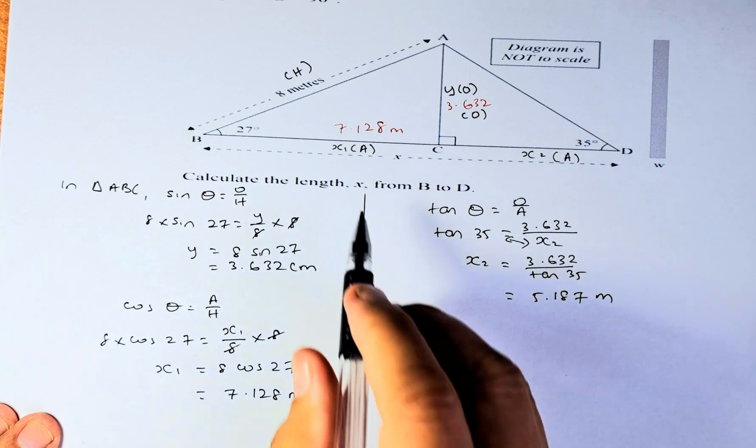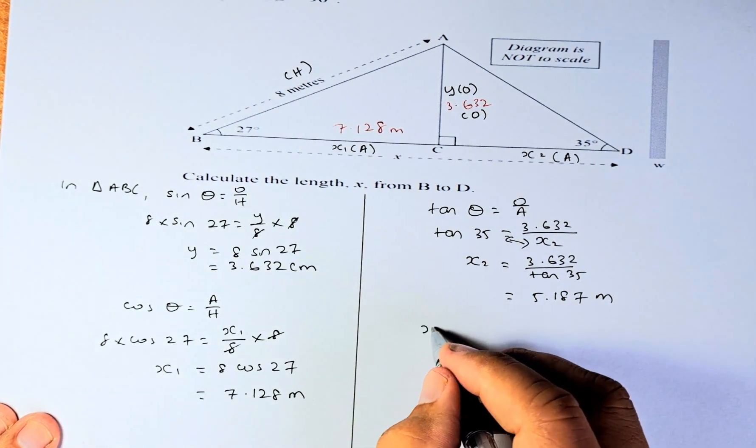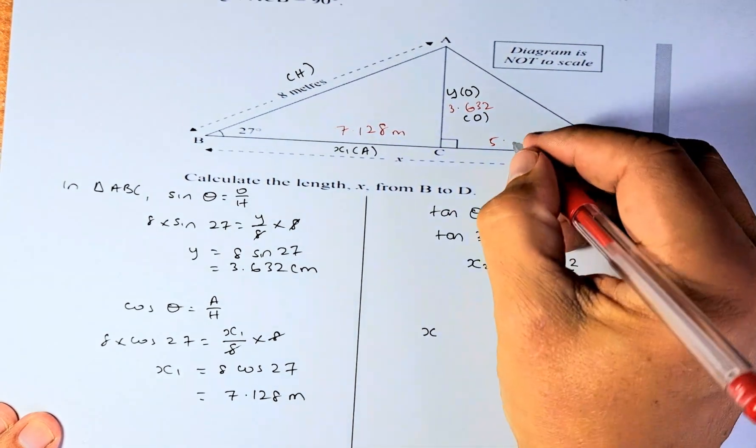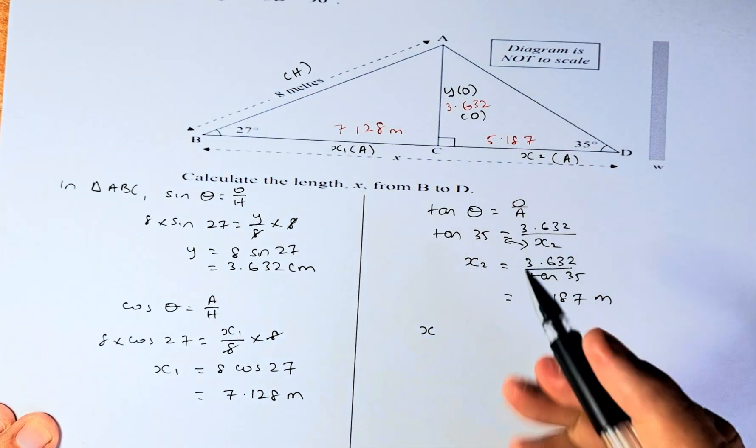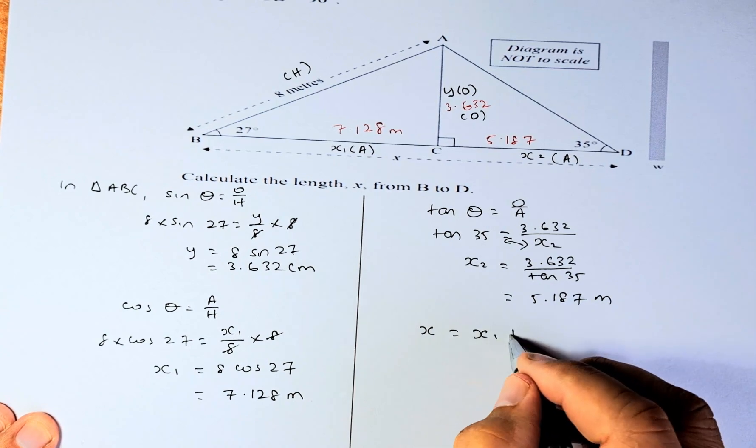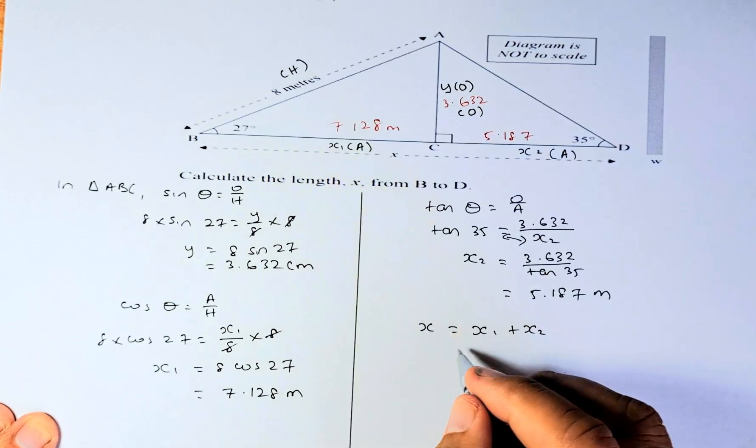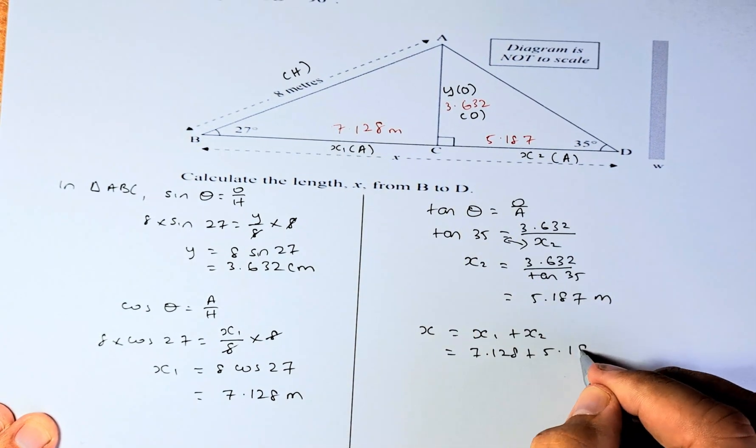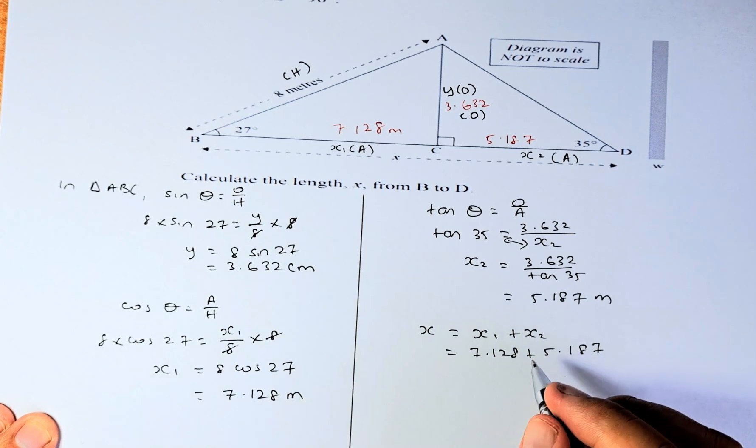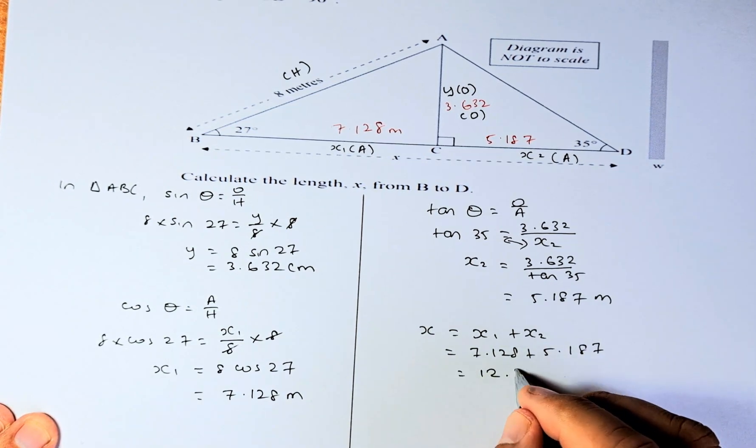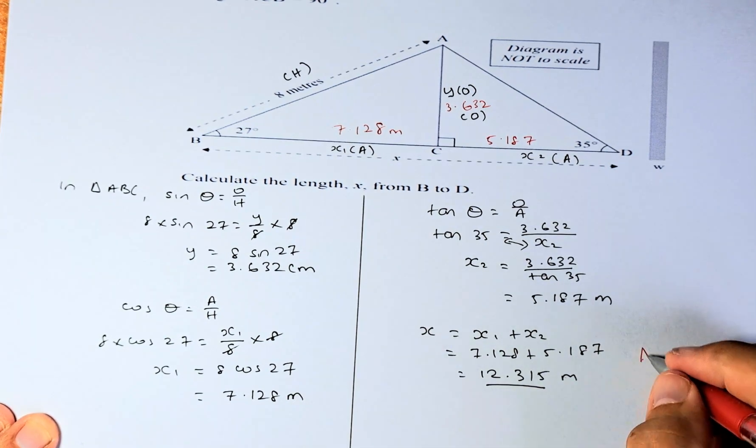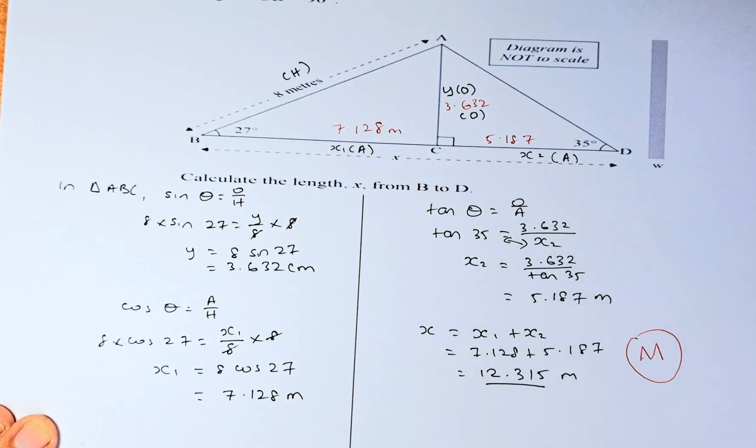The last step, they ask you to calculate X. X is just going to be X1 plus X2. So X1 is 7.128, and X2 is 5.187. Put it in the calculator, and the answer is going to be 12.315 meters. That will give you a merit in NCA Level 1 Geometric Reasoning.